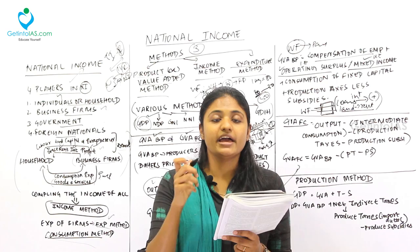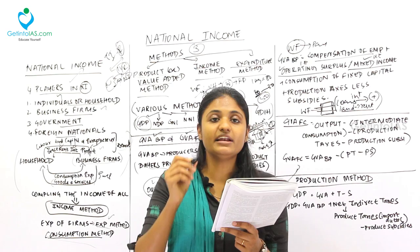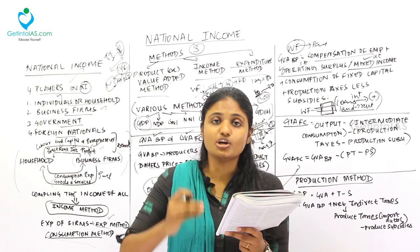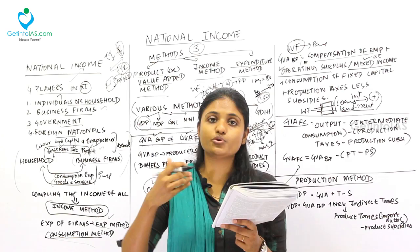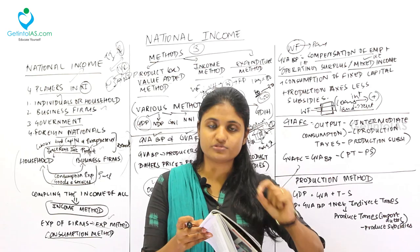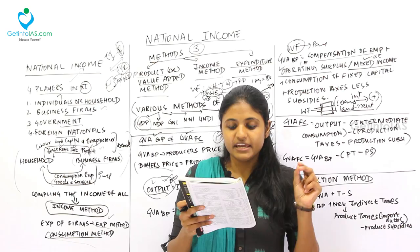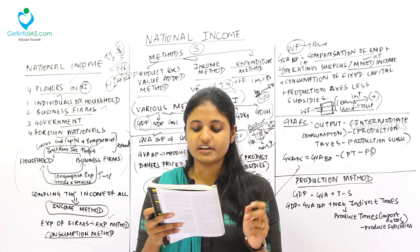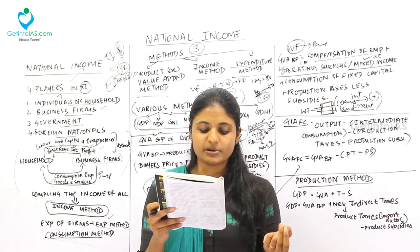Incorporated enterprises are enterprises established as a separate legal entity — they can enter contracts, be sued in court, and borrow money just like a human being. Examples include companies and limited liability partnerships registered under the Companies Act. Unincorporated enterprises are the opposite — they are not a separate legal entity and there is no distinction between owners and investors. Examples include partnership firms.